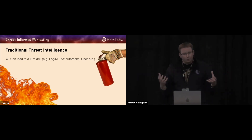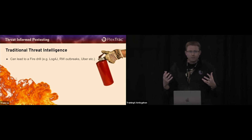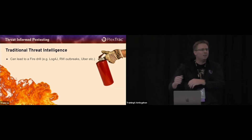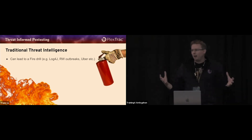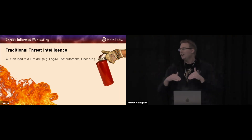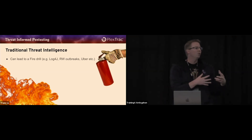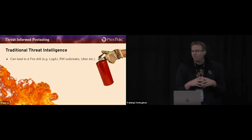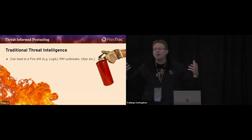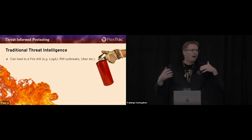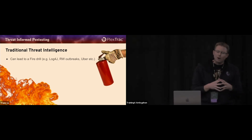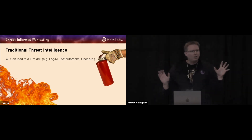This can lead to big fire drills. Take log4j, for example — stakeholders say 'this is happening in the world,' and everyone felt some of the pain around log4j. Ransomware outbreaks can lead to spending weekends trying to identify if you're vulnerable. The recent Uber breach with MFA fatigue — these are things that pop up where, as an organization, you want to quickly identify if you have these gaps. This is the traditional threat intelligence approach.